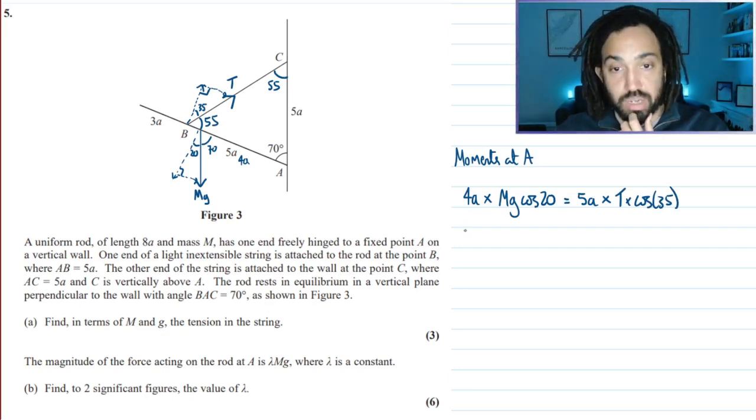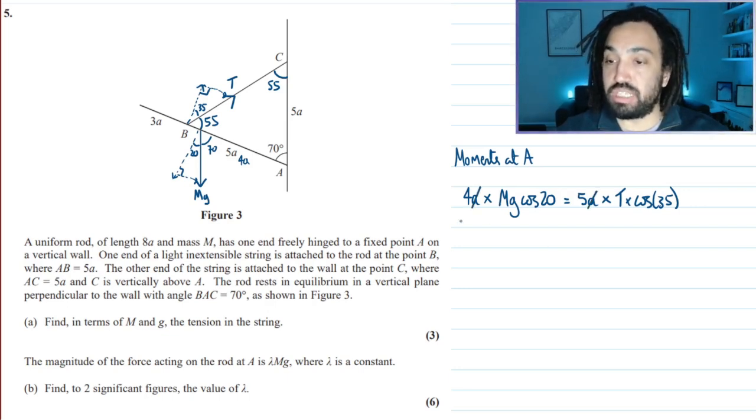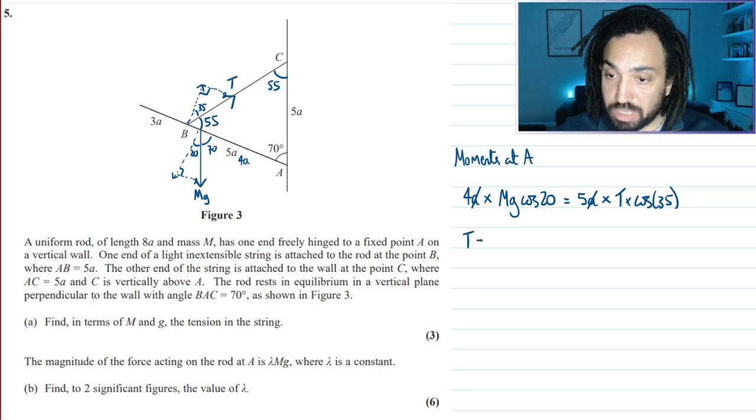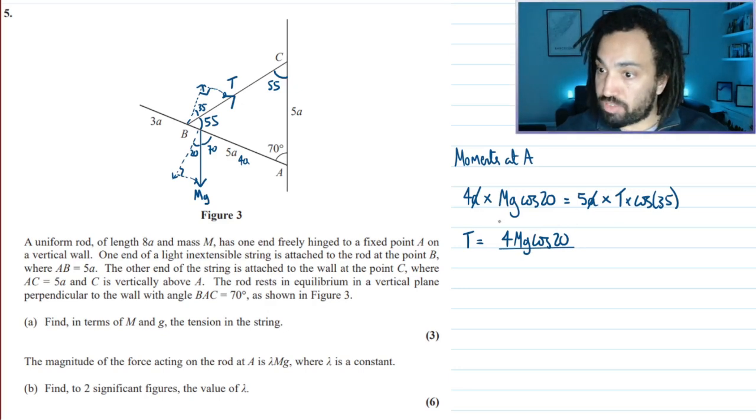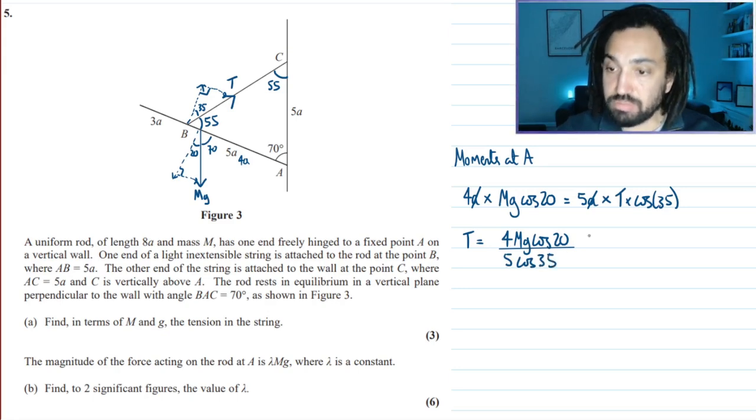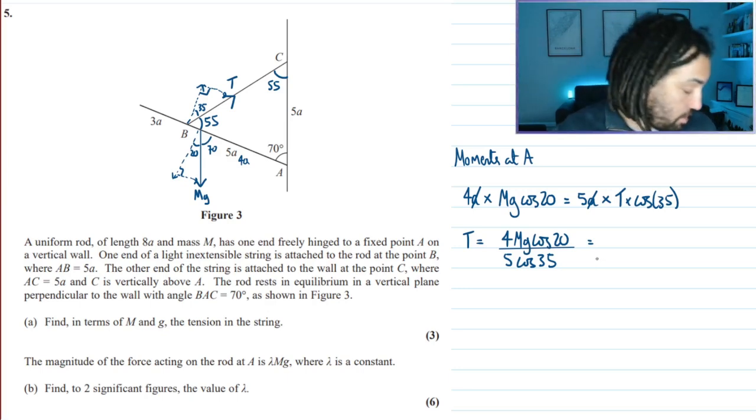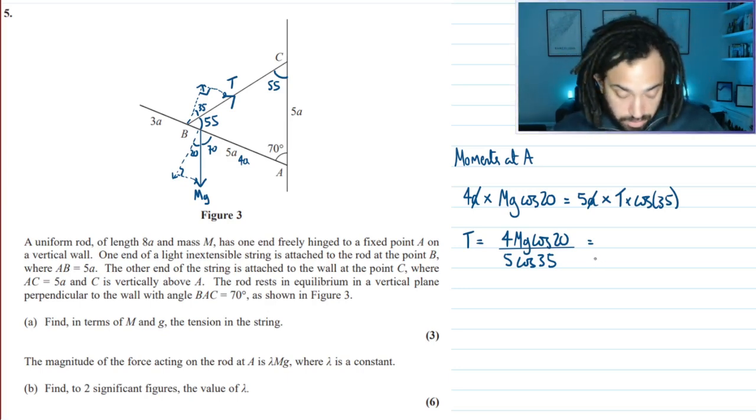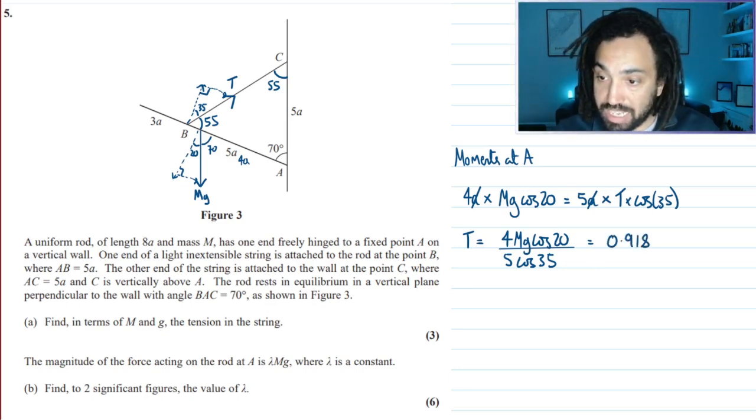Now I can rearrange for T. First I can divide by a on both sides. Rearranging this equation for T gives me 4mg cos 20 divided by 5 cos 35. When I work that out on my calculator, that gives me a value of 0.918mg.